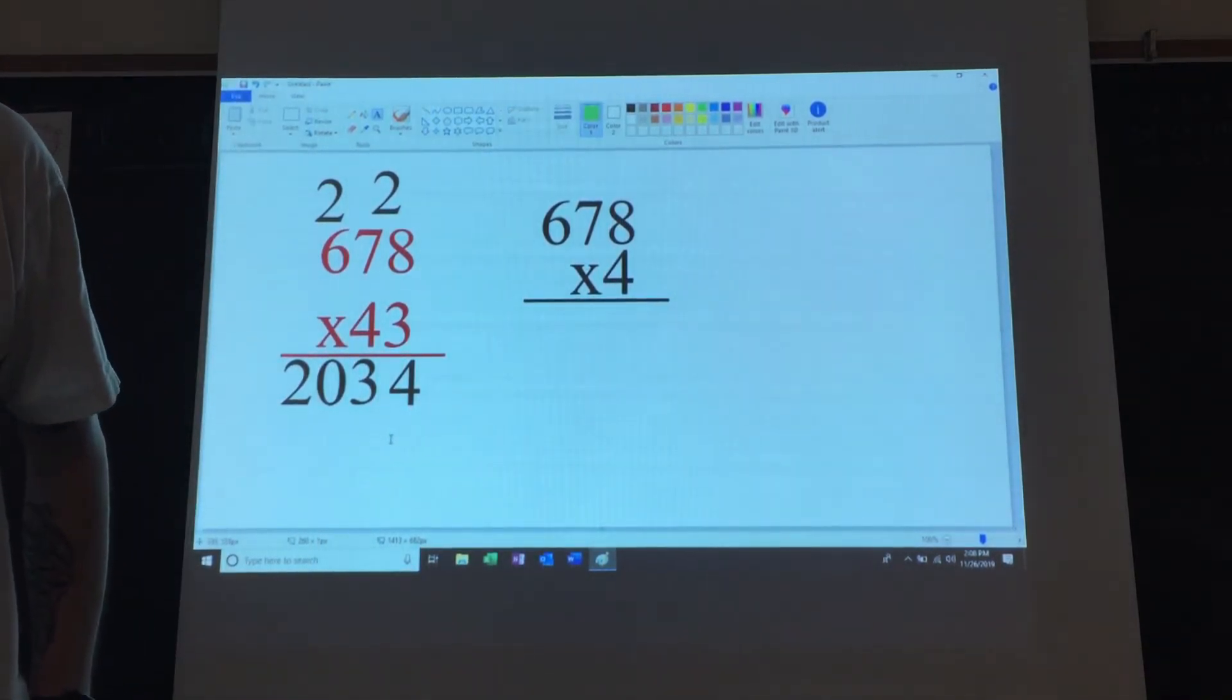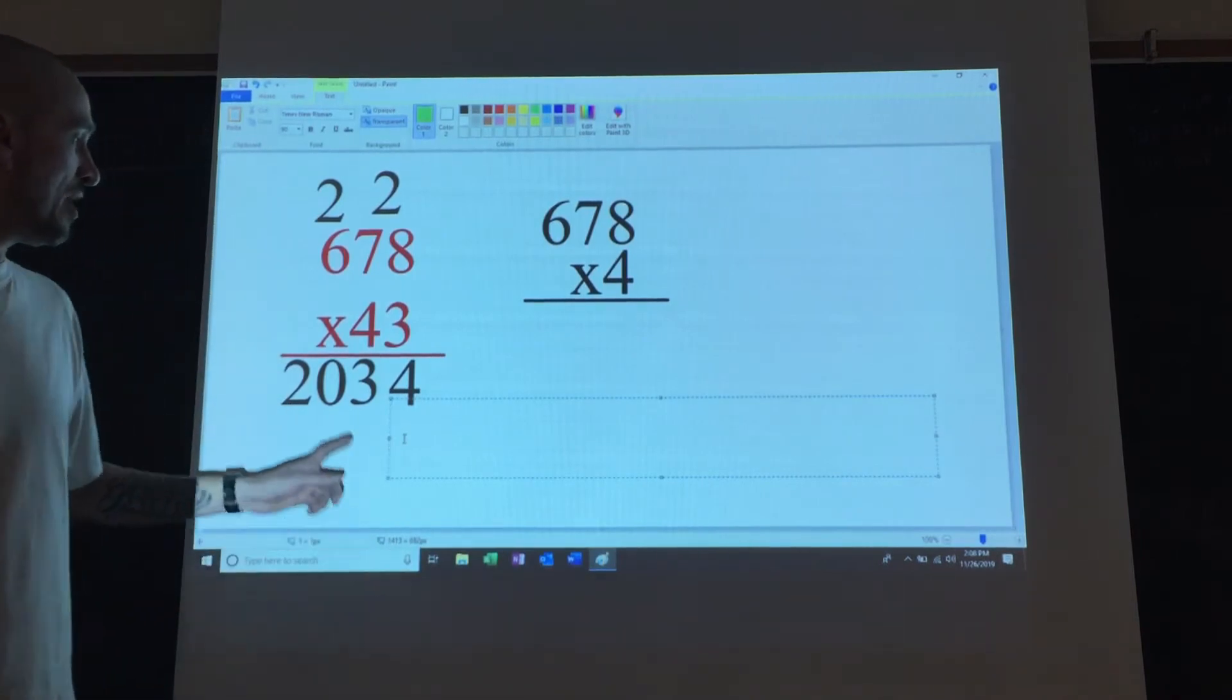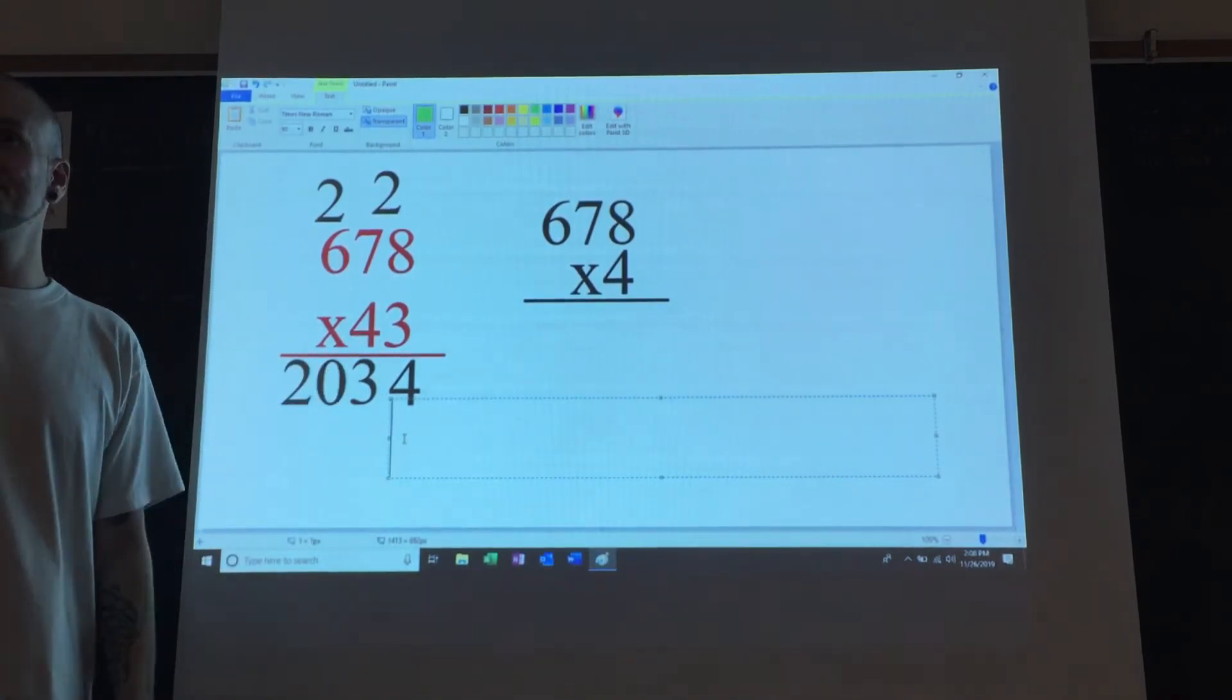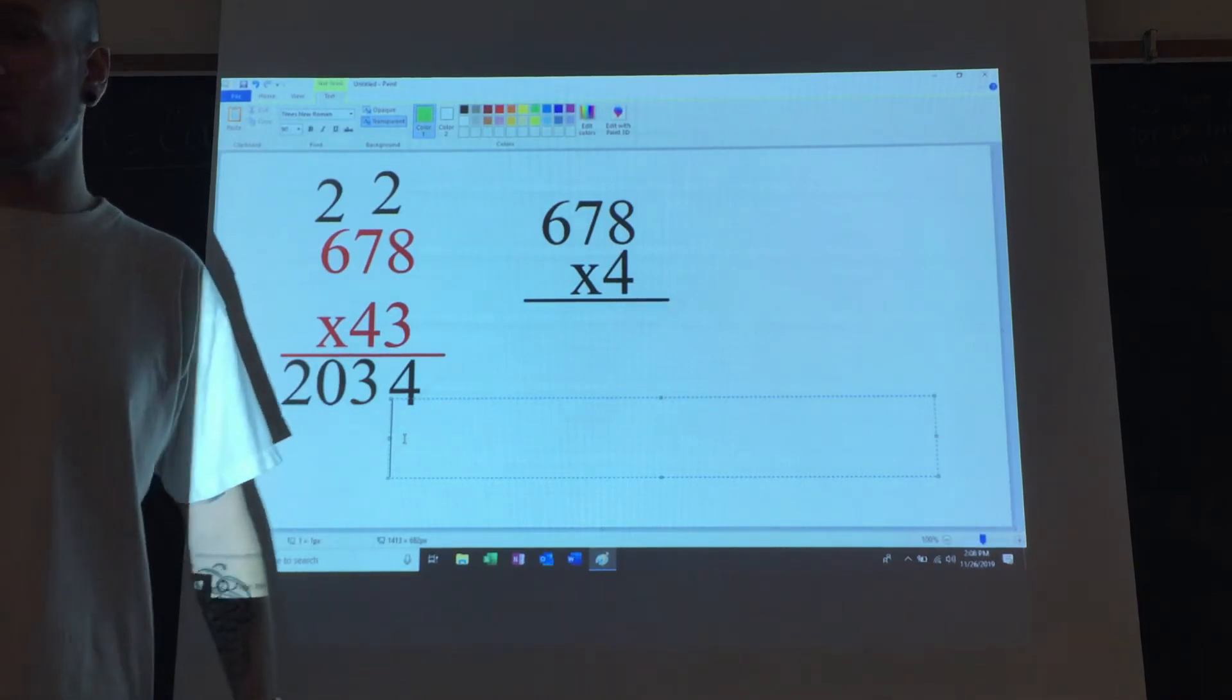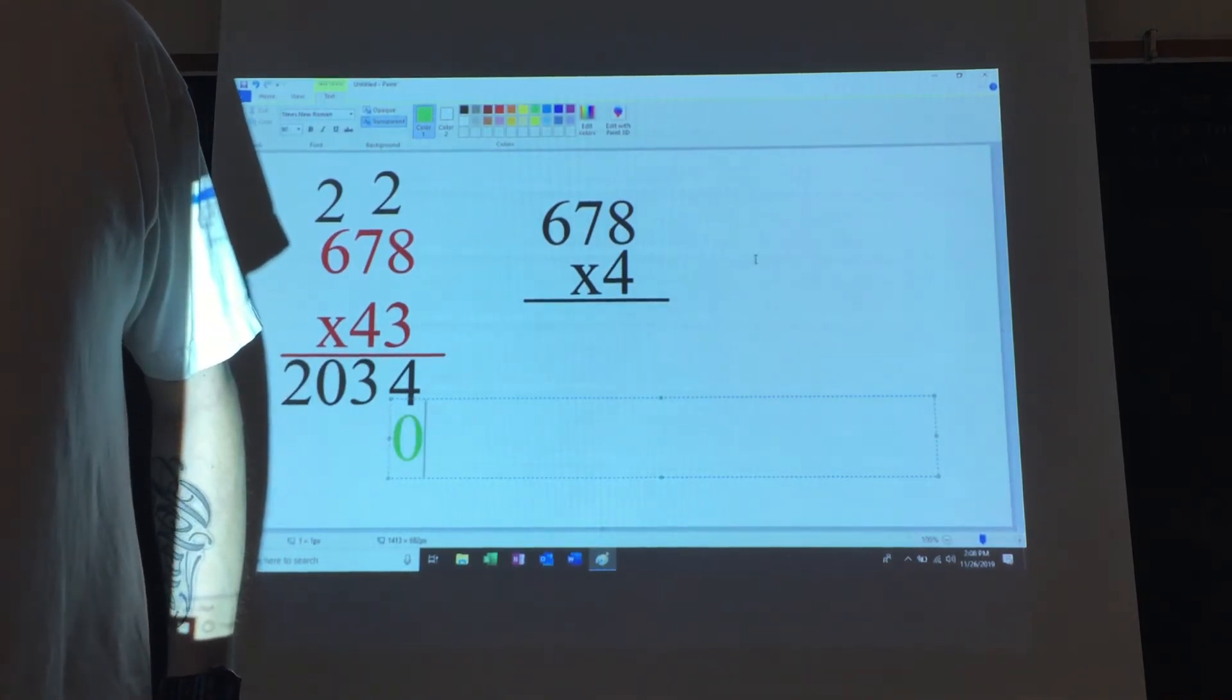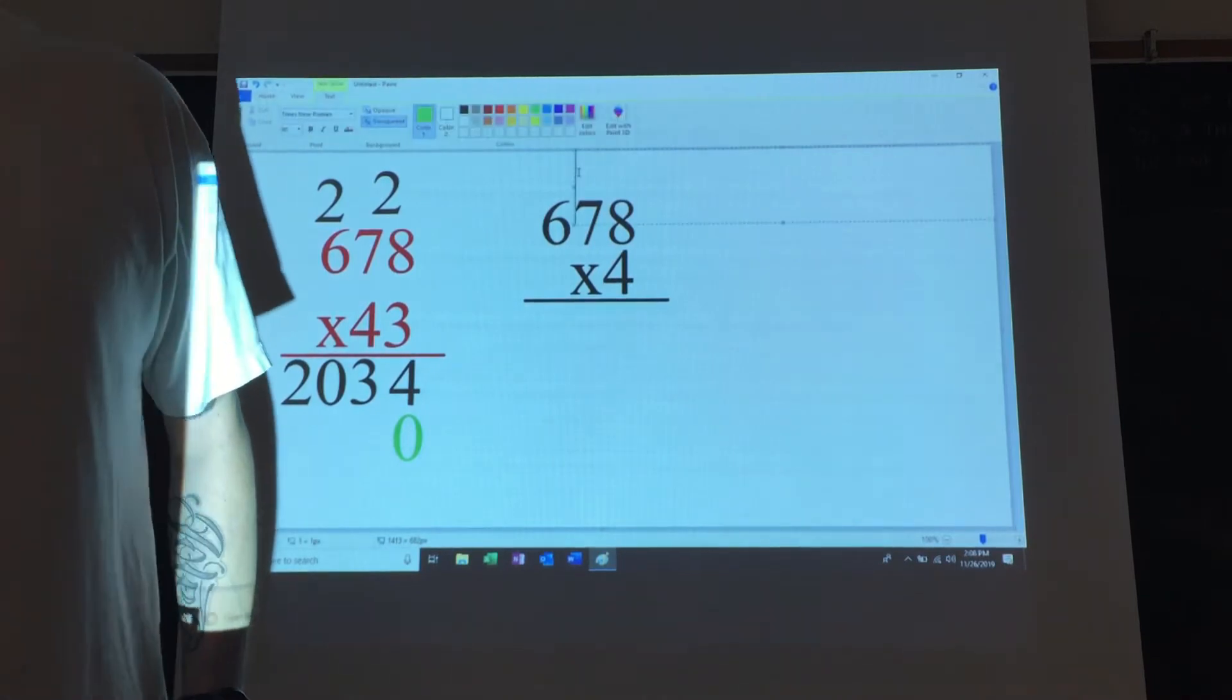Before we actually do that, we're not really multiplying it by 4. What are we multiplying it by? Yes, 40. Right, so that's why we add a 0 down here.